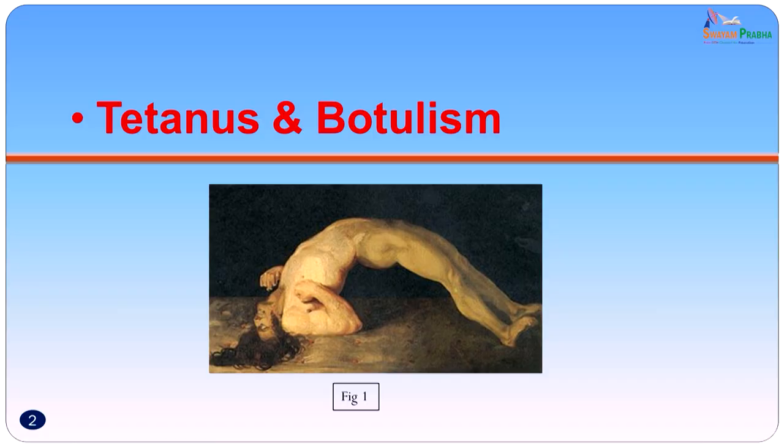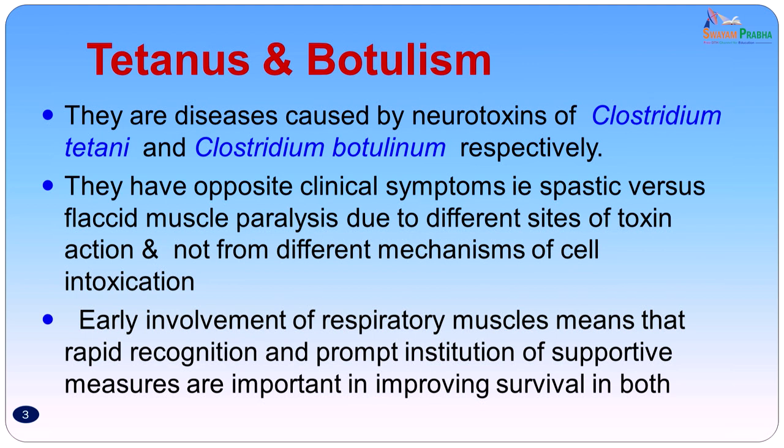Today's session we will be dealing with bacterial toxins which affect the nervous system. Essentially we are dealing with two diseases: tetanus and botulism. Both these diseases have a lot in common. They are diseases caused by neurotoxins of Clostridium tetani and Clostridium botulinum respectively. The bacteria are similar, the neurotoxins produced by them are similar. Yet they have opposite clinical symptoms — that is spastic versus flaccid muscle paralysis — due to different sites of toxin action.